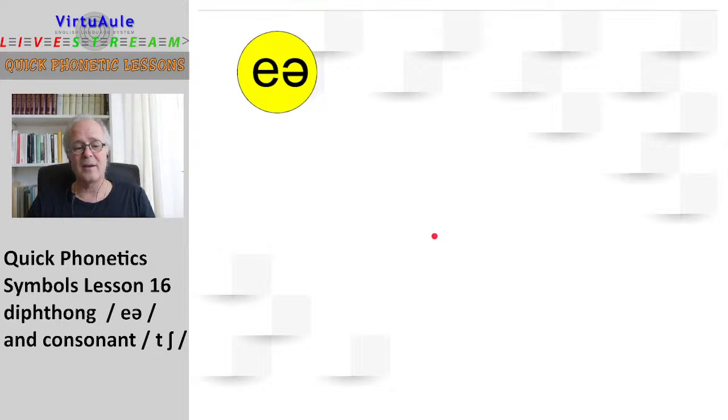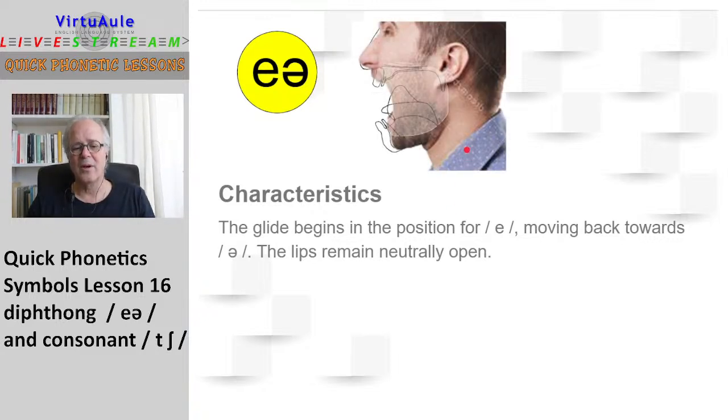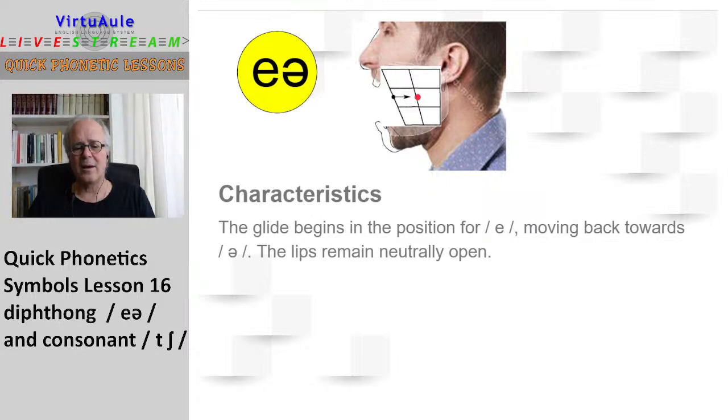And the diphthong, or the sound air, this characteristic glide begins in the position for eh, and then it moves backwards towards the schwa uh. The lips remain neutrally open. So if you see in the mouth, we have a little glide from the mid position towards the front of the mouth, and it goes into the schwa uh.